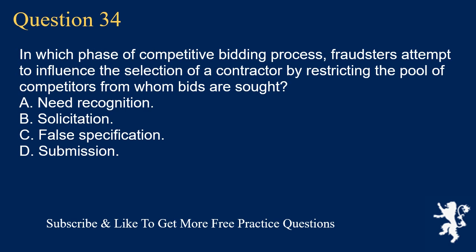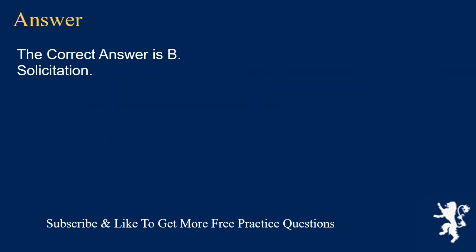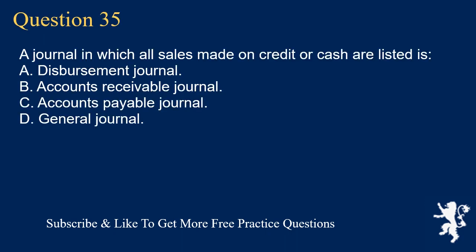Question 34: In which phase of the competitive bidding process do fraudsters attempt to influence the selection of a contractor by restricting the pool of competitors from whom bids are sought? A. Need recognition. B. Solicitation. C. False specification. D. Submission. The correct answer is B. Solicitation.